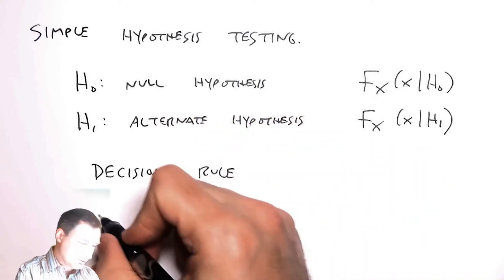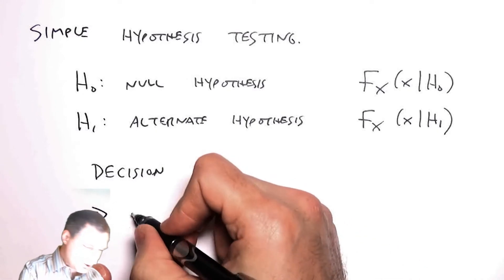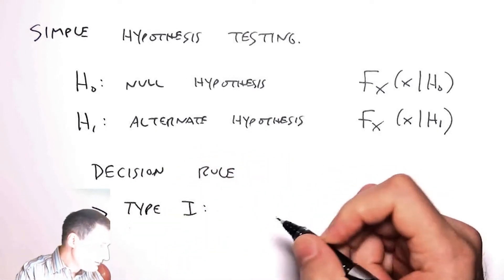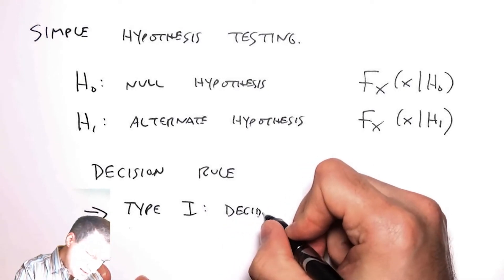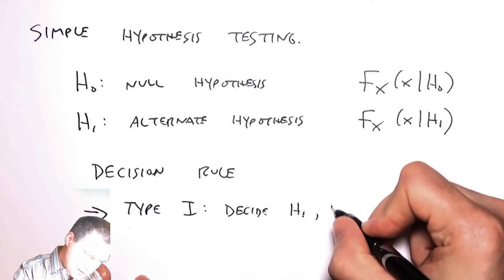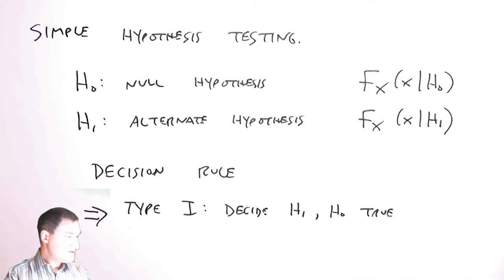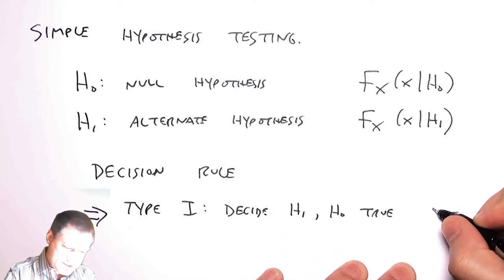And that decision rule can lead to different errors. So now I'm going to give these errors a name. So type 1 error is basically saying I decide H1, but H0 is true. This is kind of like saying, usually the alternate hypothesis is usually something like the patient has the disease. So usually H0 means that something is absent and H1 means something is present. So if I decide that the thing is present when it's actually absent, that's what I would call basically a false alarm.